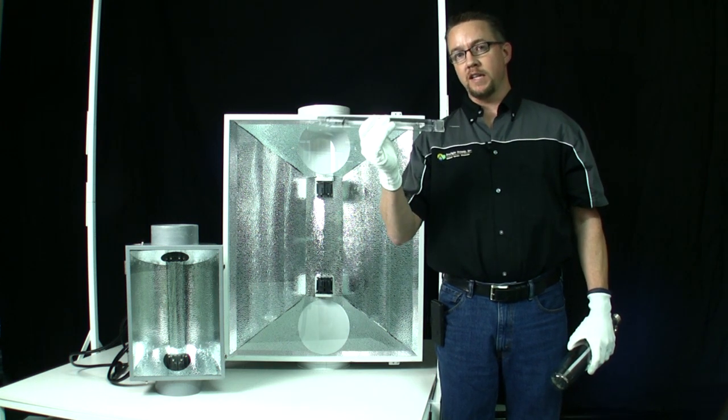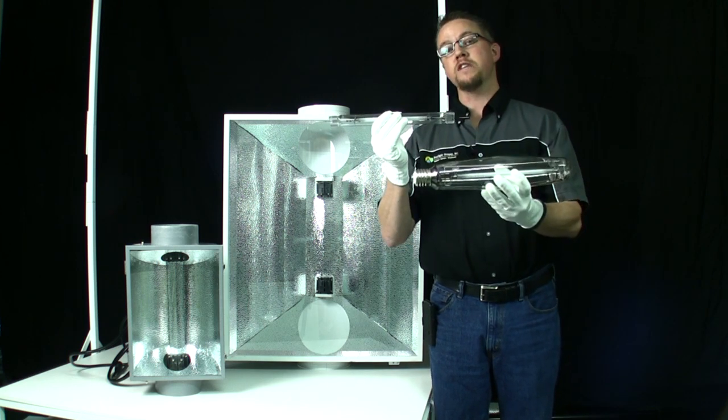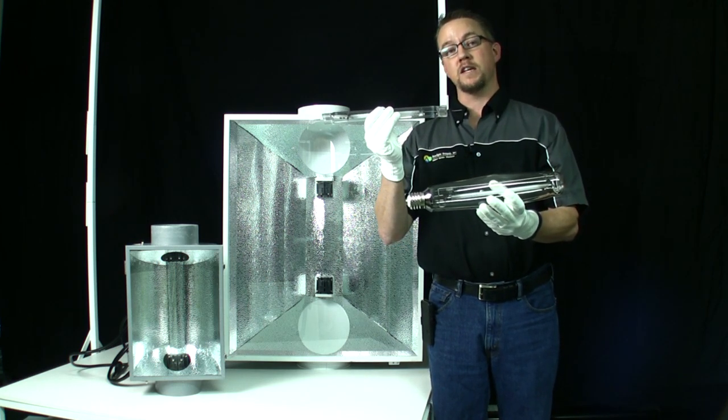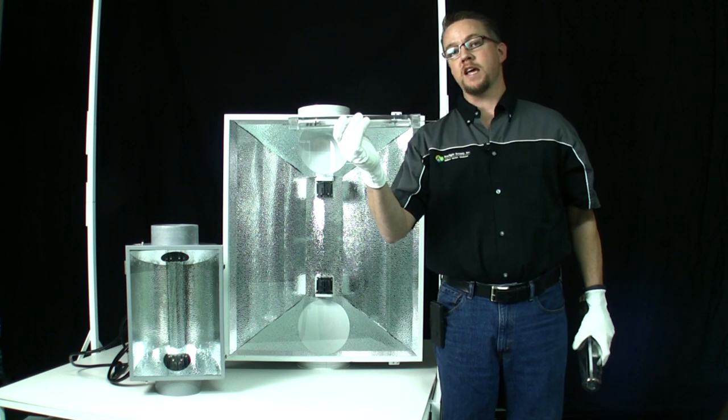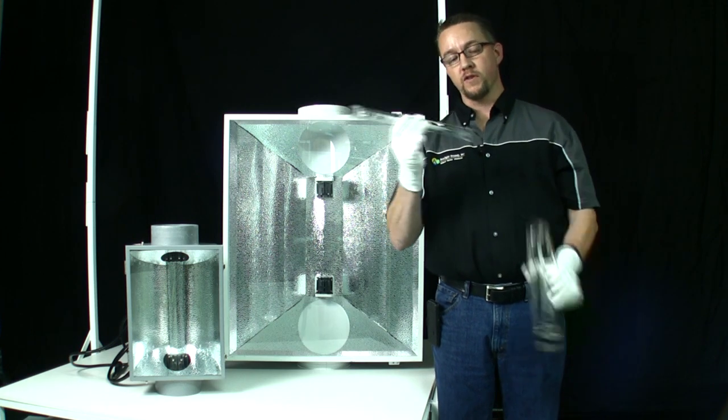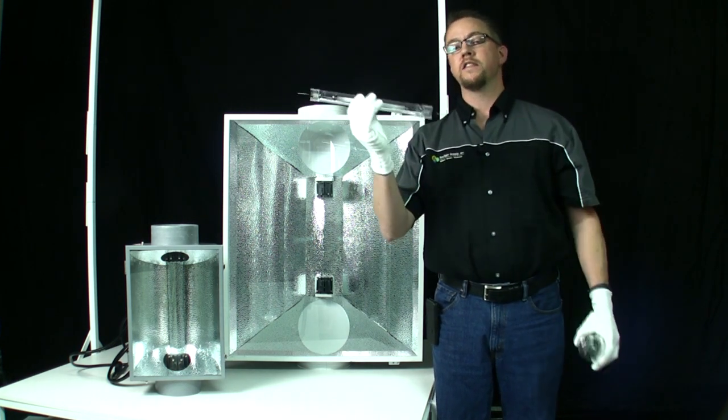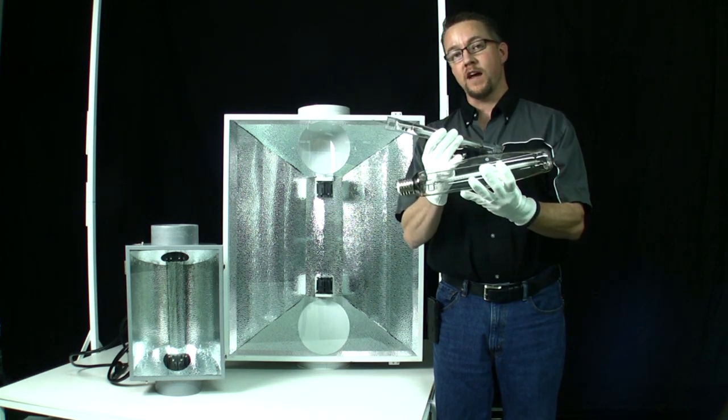The high-PAR double-ended lamp's construction is much different than traditional E39 MOGO base single-ended HPS lamp. These double-ended HPS lamps have a quartz outer jacket versus a borosilicate glass. The DE lamp is nitrogen filled versus a standard vacuum.